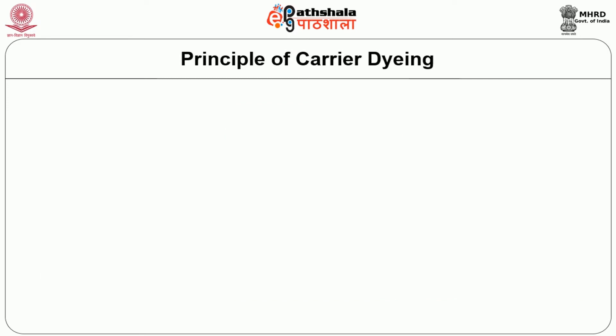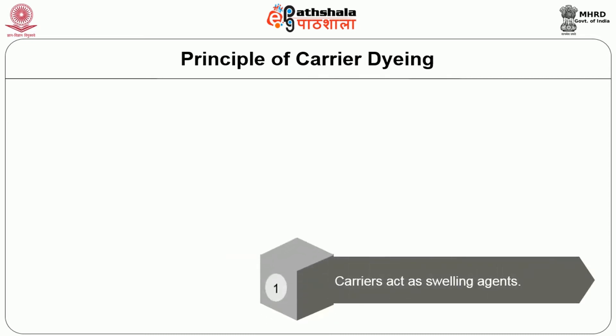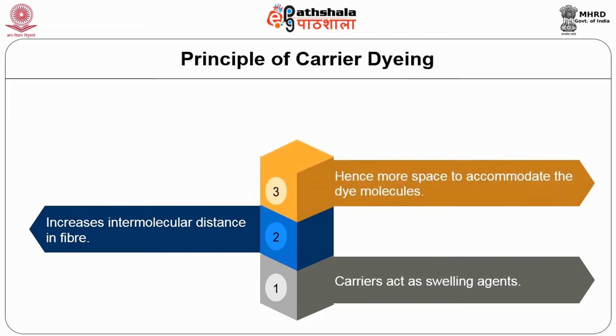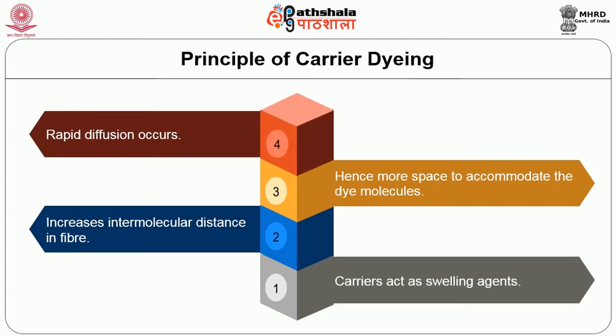The principle of carrier dyeing: carriers are swelling agents, and polyester fibres are first treated with carriers before dyeing. These carriers swell the fibre and create intermolecular distance within the fibre. This intermolecular distance creates more space which can accommodate the dye molecules, and the dispersed dye molecules get trapped inside the space between the intermolecules. Rapid diffusion occurs when the polyester fibre is treated with carriers.